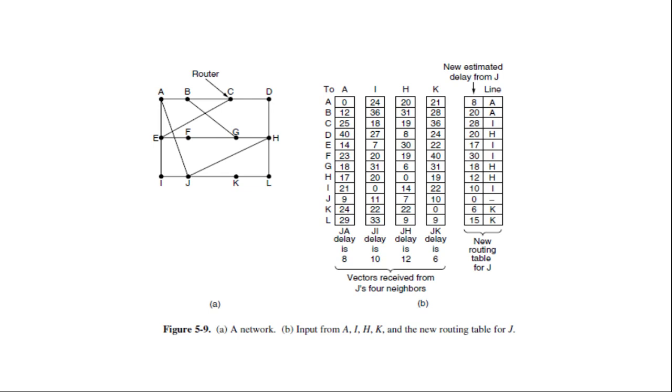Suppose that J has measured or estimates its delay to its neighbor A, I, H and K as 8, 10, 12 and 6 ms respectively. Consider how J computes its new route to router G. It knows that it can get to A in 8 ms and furthermore A claims to be able to get to G in 18 ms. So J knows it can count on a delay of 26 ms to G if it forwards packet bound for G to A.